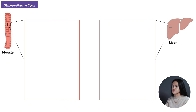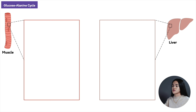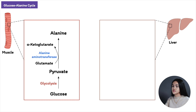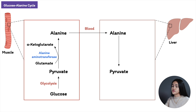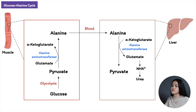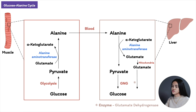In the glucose-alanine cycle, amino groups in muscle are collected as glutamate by transamination. Glutamate can donate its amino group to pyruvate — which is abundant in muscles due to glycolysis — via alanine aminotransferase, producing alanine. Alanine travels in the blood to the liver, where alanine aminotransferase transfers the amino group from alanine to alpha-ketoglutarate, forming pyruvate and glutamate. Glutamate then enters the mitochondria where glutamate dehydrogenase releases the ammonium ion.